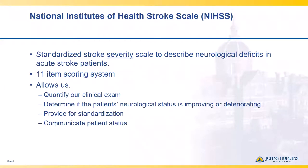The NIHSS is a standardized stroke severity scale. It is not a diagnostic exam because it cannot localize where a patient's stroke is. It is an 11-item scoring system. When it comes to looking at neurological deficits, it grossly overestimates the right hemisphere and the posterior circulation. So on top of doing the NIHSS, doing a more comprehensive neurological exam on your patients is going to get a more balanced exam.